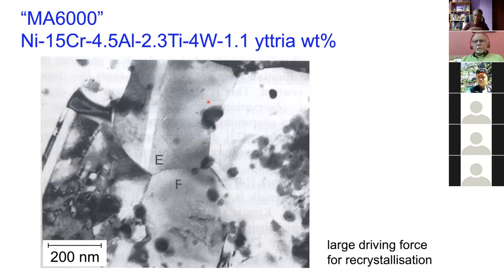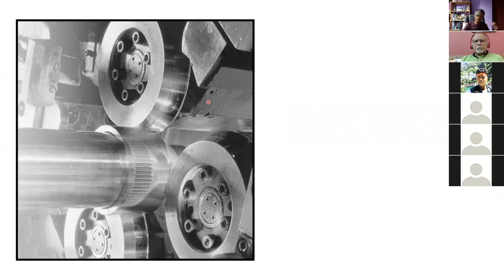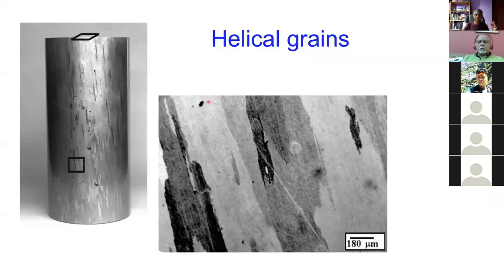Supposing you wanted to create a tube with a helical grain structure to get good hoop properties as well as longitudinal properties. There is equipment to twist the tube, and when you recrystallize in a temperature gradient, you get very large grains following a helical path around the tube. This is where we were working on producing tubes for biological incinerators.